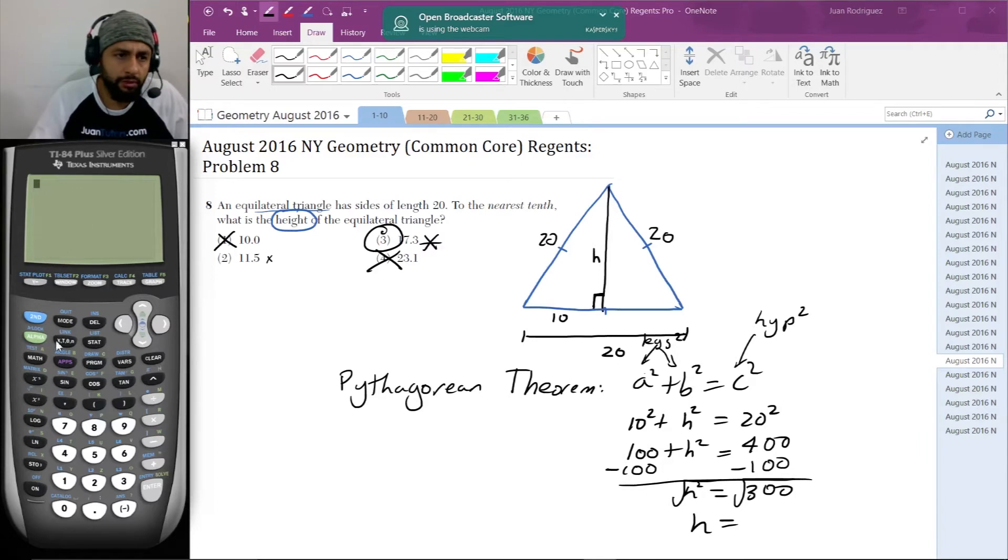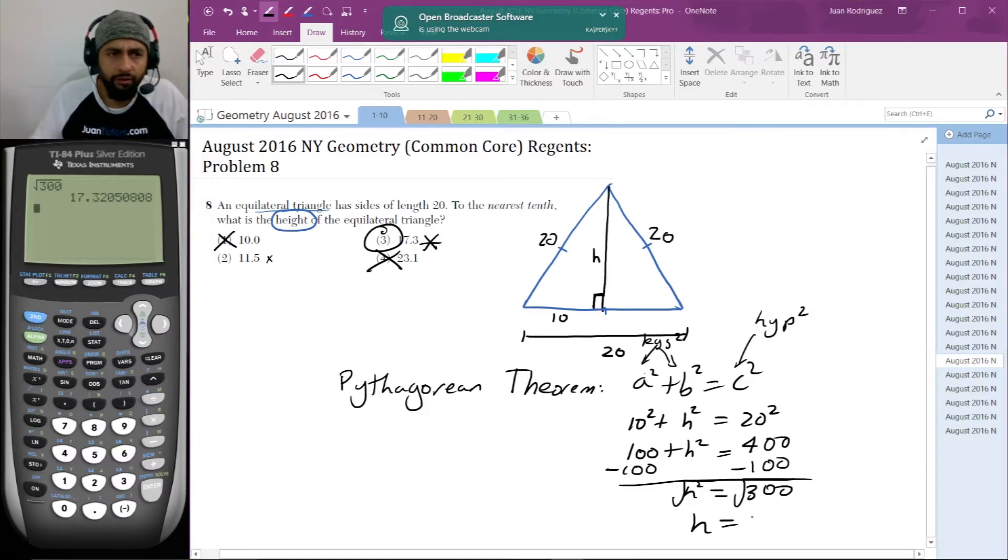Let's get an actual answer: √300 = 17.32050808, so 17.3. That is in fact the answer.